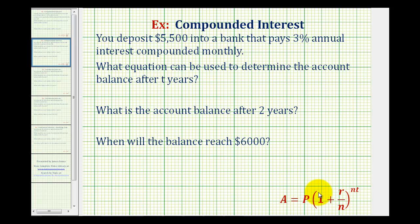We'll be using the compound interest formula given below, where P represents the principal or initial investment amount, R is the annual interest rate expressed as a decimal, N is the number of compounds per year — notice how N occurs in the exponent — and T is the time in years. A is the amount after the given time.